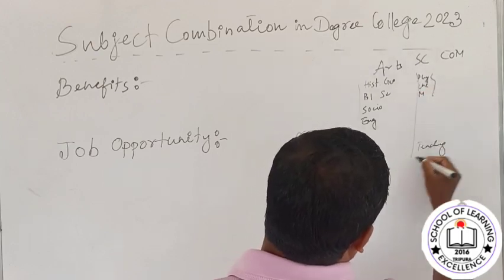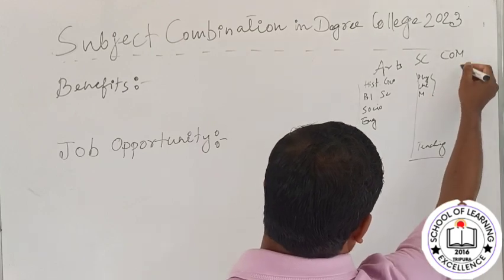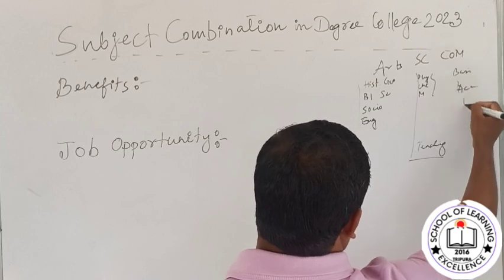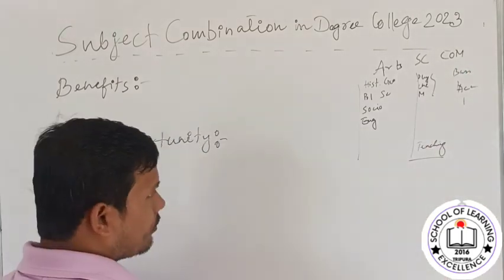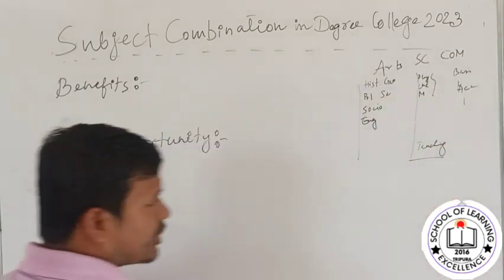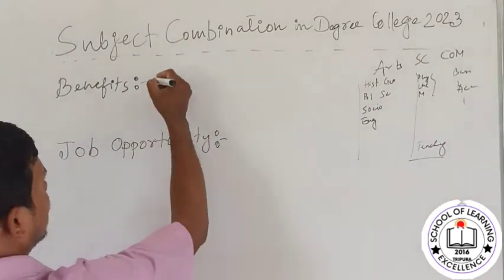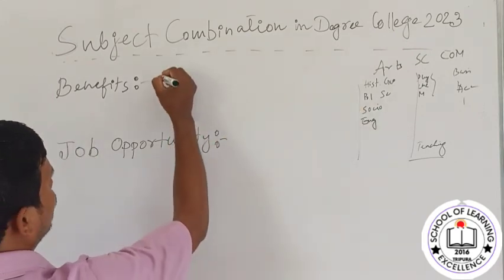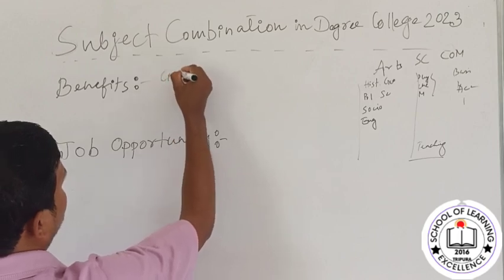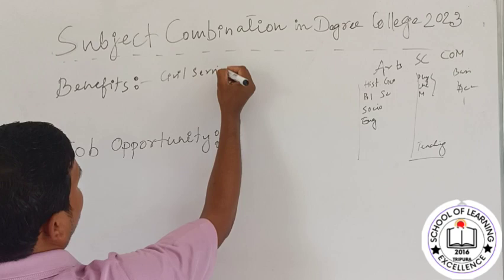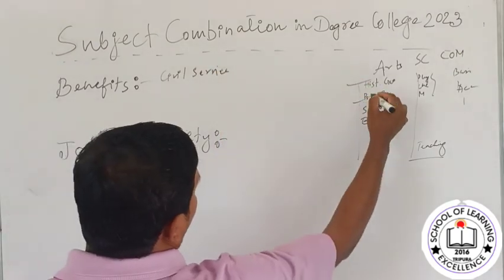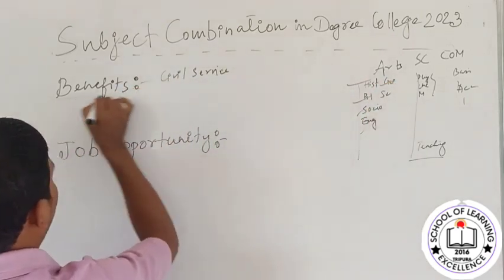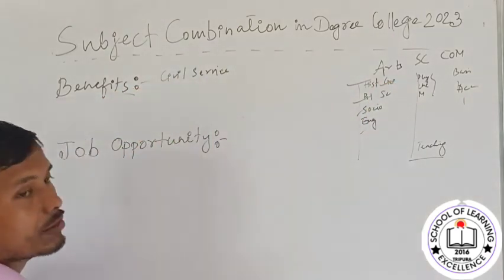The subject combination of Science and Commerce includes Business Studies and Accountancy. You choose a subject in the arts style of Science and Commerce. If you are interested in civil services, you can decide to choose accordingly. If you learn the arts style, you have a special education opportunity.